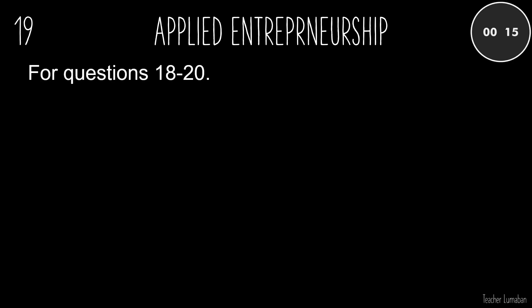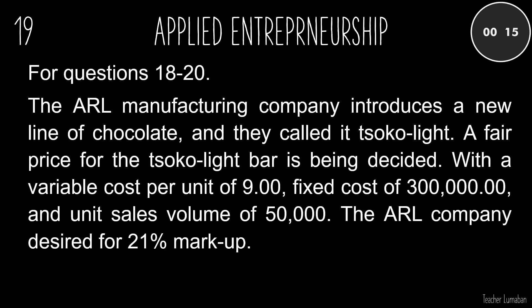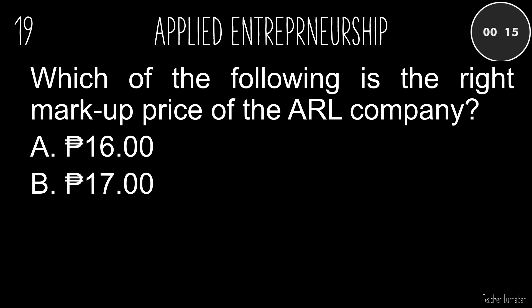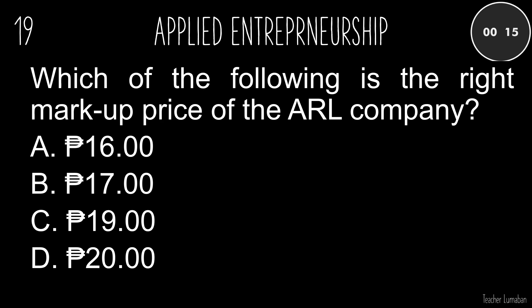The ARL manufacturing company introduces a new line of chocolate called Tsikolite, with a variable cost per unit of 9.00 pesos, fixed cost of 300,000.00 pesos, unit sales volume of 50,000, and a desired 21% markup. Which of the following is the right markup price of the ARL company? A. 16.00 pesos. B. 17.00 pesos. C. 19.00 pesos. D. 20.00 pesos.